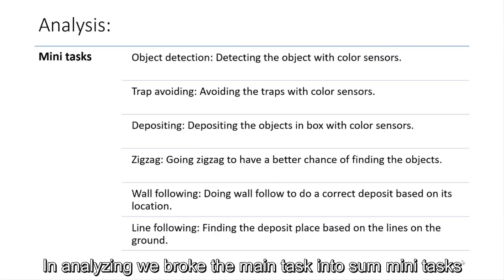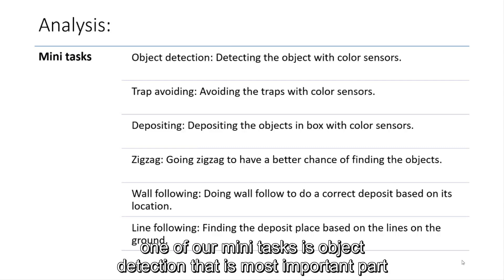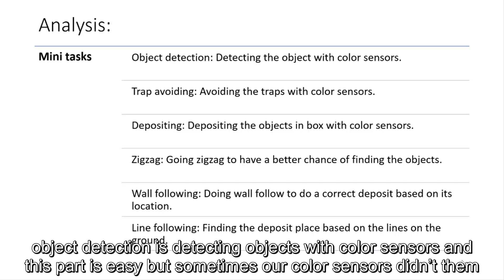In another thing, we broke the main task into some mini-tasks. One of our mini-tasks is object detection that is the most important part. Object detection is detecting our object with color sensor. And this part is easy,